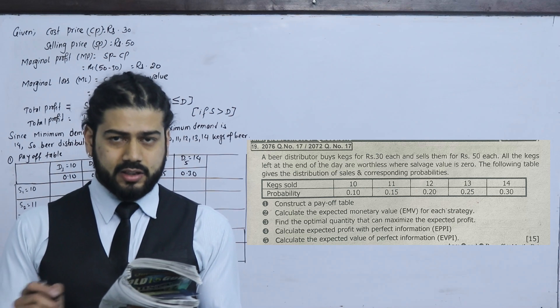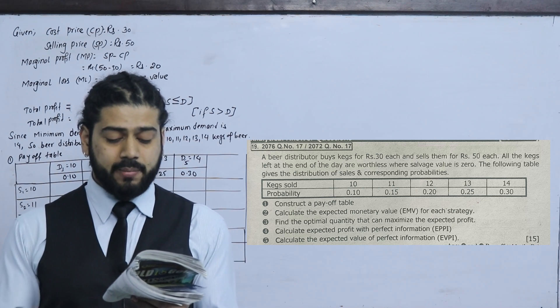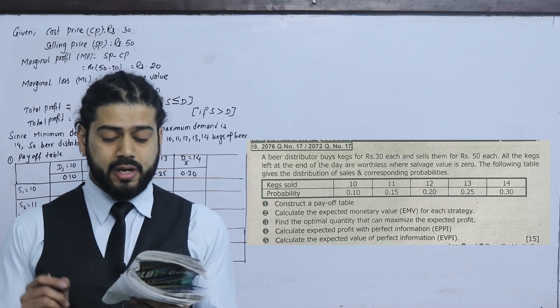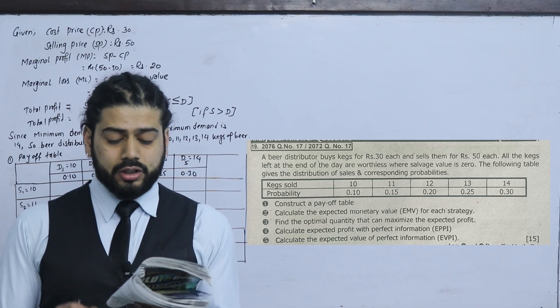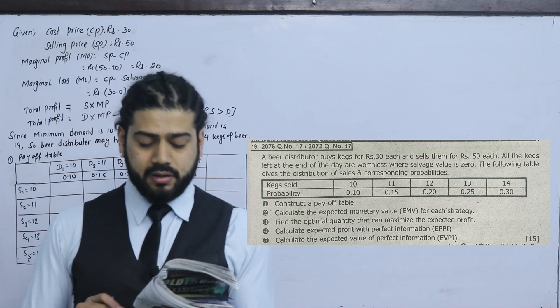The probability distribution is: 10 cases sold with probability 0.10; 11 cases sold with probability 0.15; 12 cases sold with probability 0.20; 13 cases sold with probability 0.25; 14 cases sold with probability 0.30.